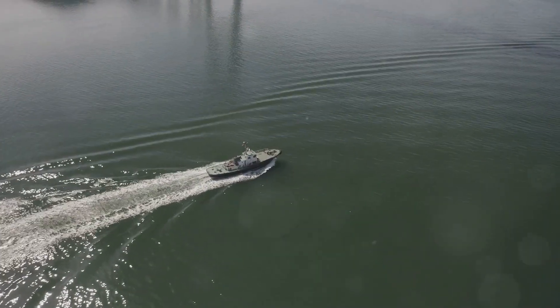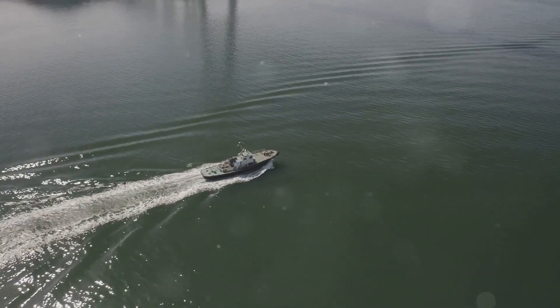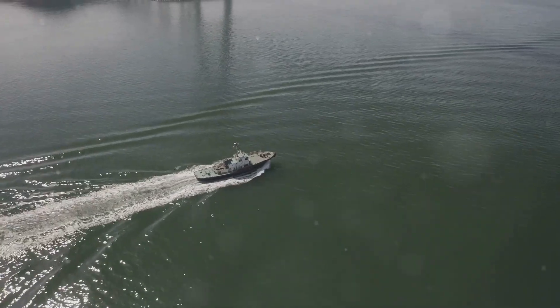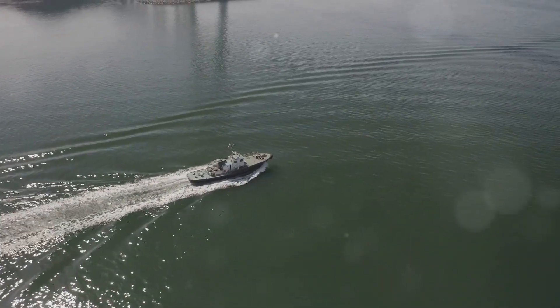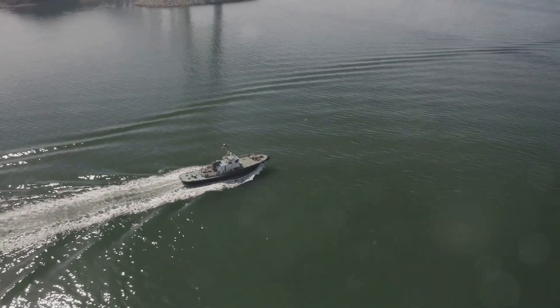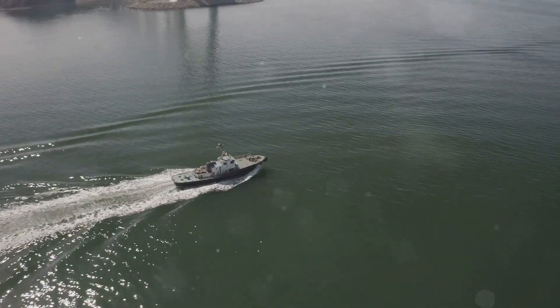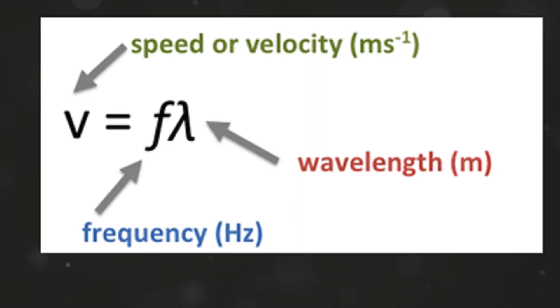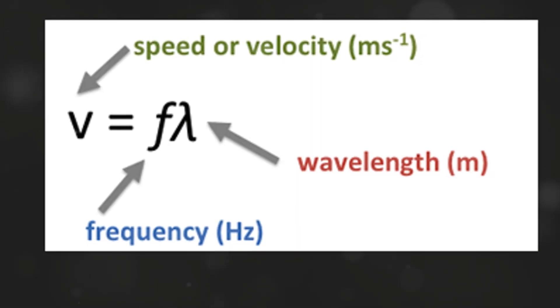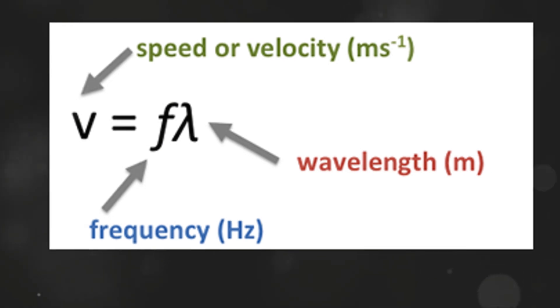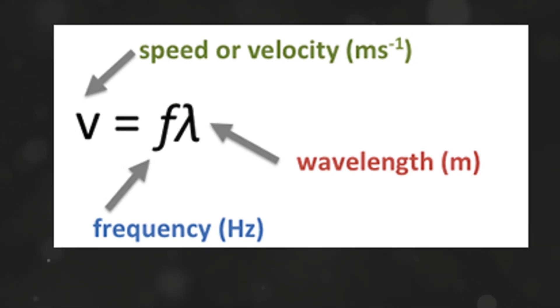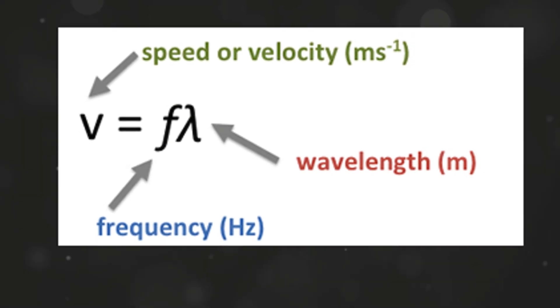Now here's the cool part: wave speed. It's how fast the wave is traveling through the medium, like water or air. The relationship is a simple formula — speed equals frequency times wavelength. So if you know two of these, you can always find the third.